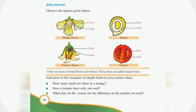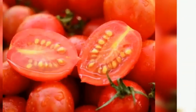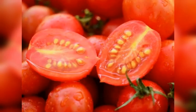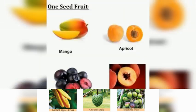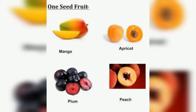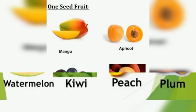Add more examples of simple fruits in your science notebook. How many seeds are there in mango? Does a tomato have only one seed? No, there are many seeds. What may be the reason for the difference in the number of seeds? Because of the number of ovules.